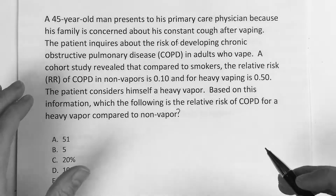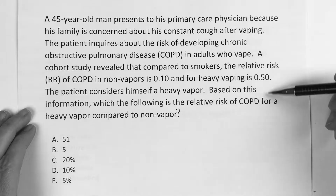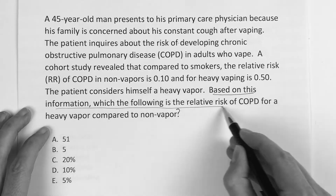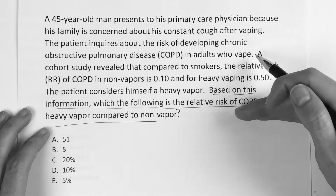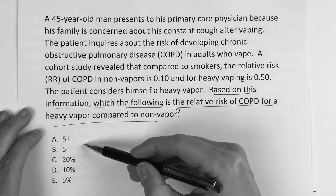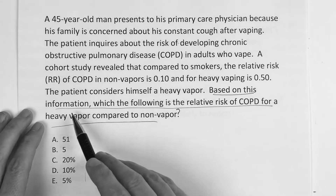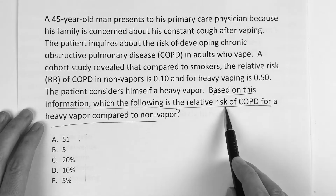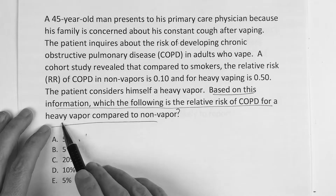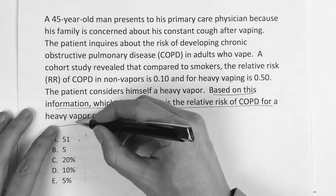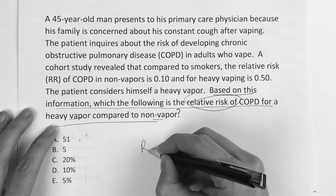So hope you liked the video. All right guys, so in a question that's really long, you just want to go to the last sentence and read what the question is — it'll help direct what you should be focusing on. You know it's a bio stats question because basically there are some numbers involved. It says: based on this information, which of the following is the relative risk of COPD for a heavy vapor compared to a non-vapor? So they're talking about vaping and relative risk.